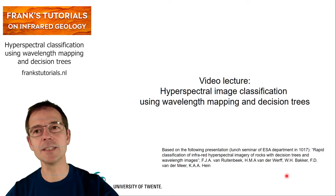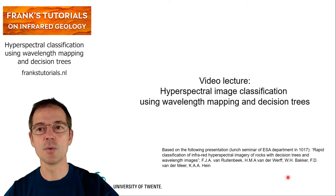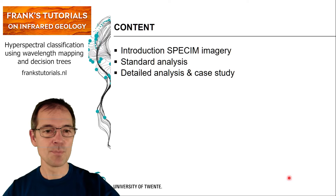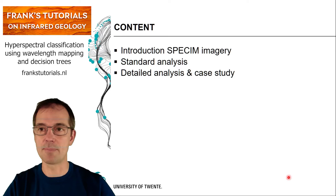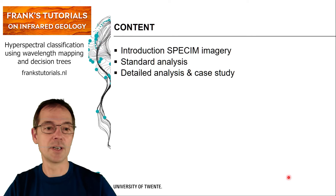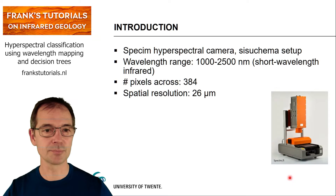This presentation is based on a lunch seminar in the Earth Systems Analysis department that I gave in November 2017, with the title 'Rapid Classification of Infrared Hyperspectral Imagery of Rocks with Decision Trees and Wavelength Images.' First I will introduce the SPECIM hyperspectral imagery, then show how to do a standard analysis with wavelength mapping and decision trees, followed by a detailed analysis in the form of a case study of hydrothermally altered rocks from Australia.